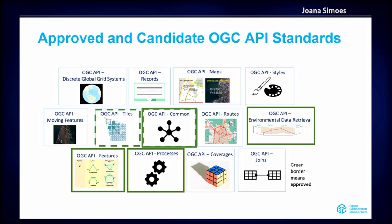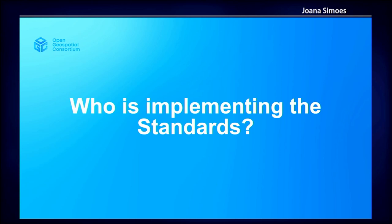The OGC API family includes many different standards, just as was the case for the OWS services. Depending on the type of data you want to expose, you could use OGC API Maps, OGC API Routes, Coverages, or Processes. They are in different stages of development; the ones shown in green have at least one approved part. And the key question is: who is actually using these new OGC APIs?